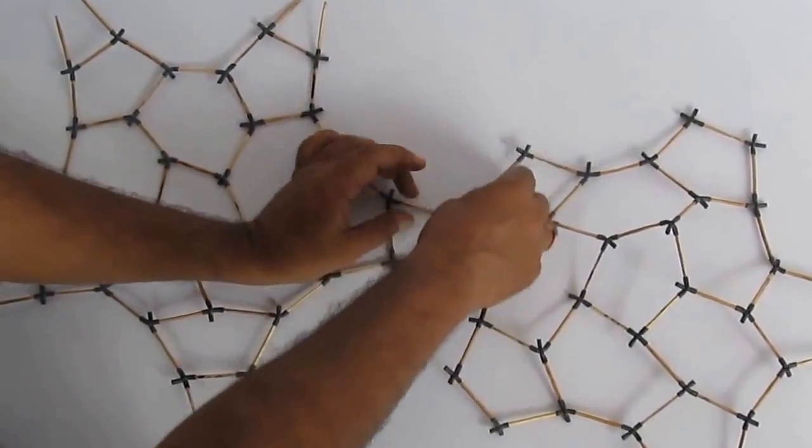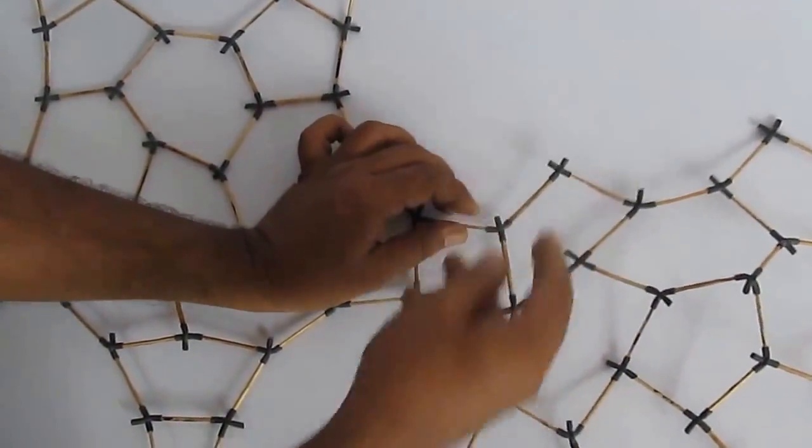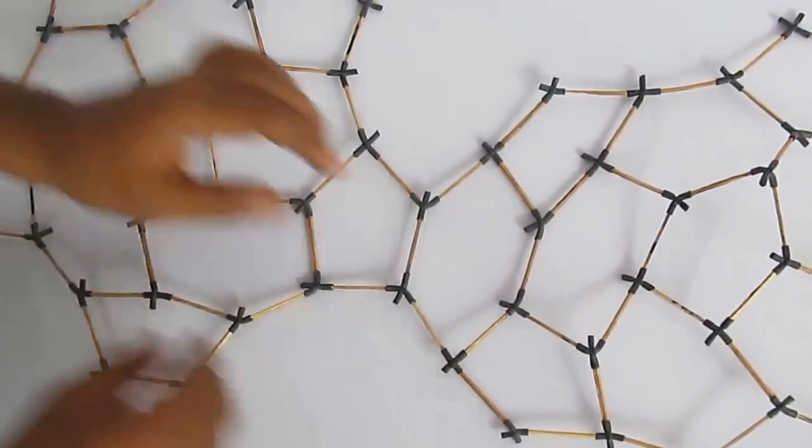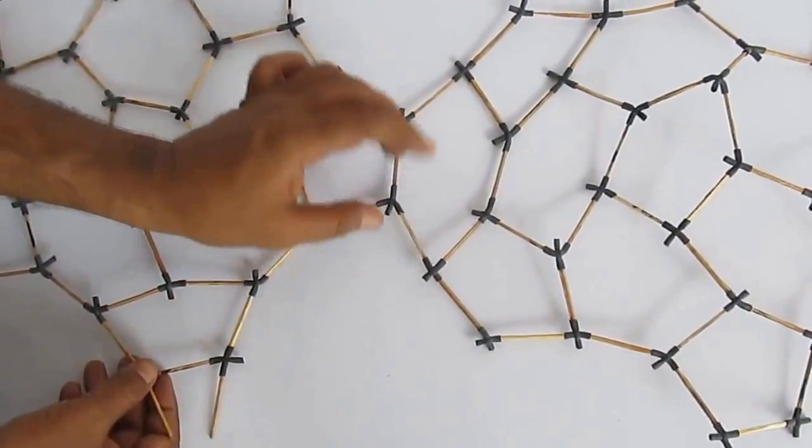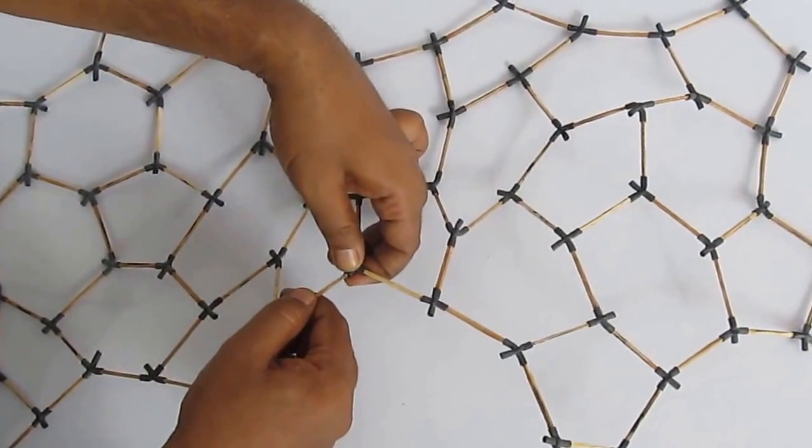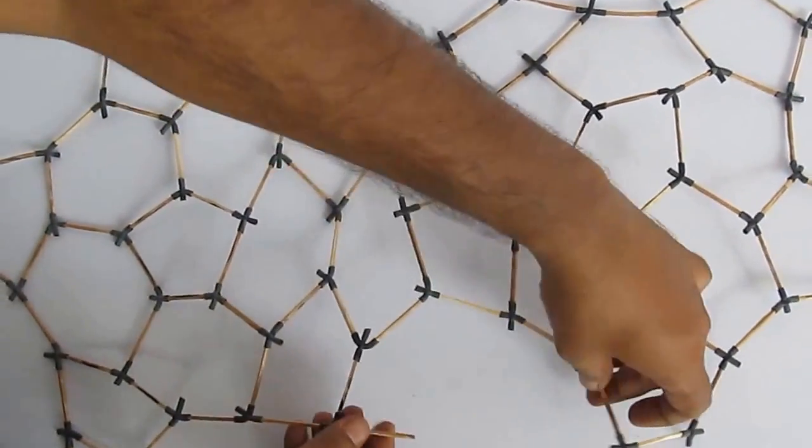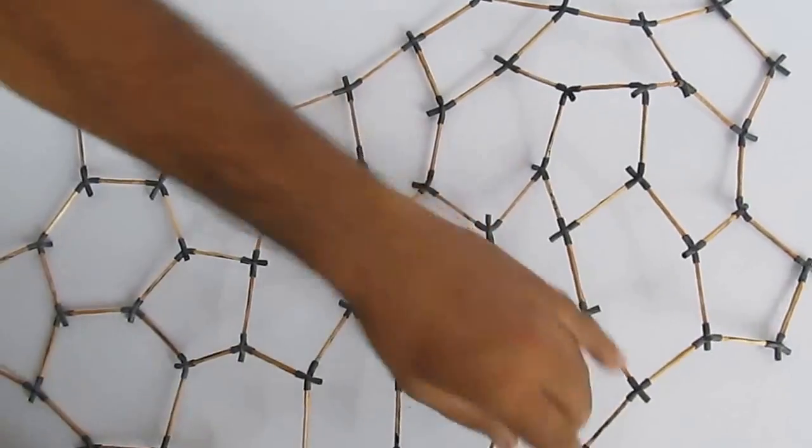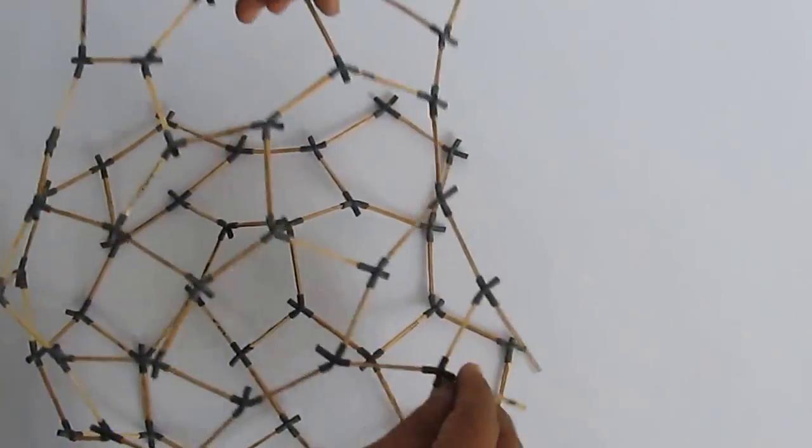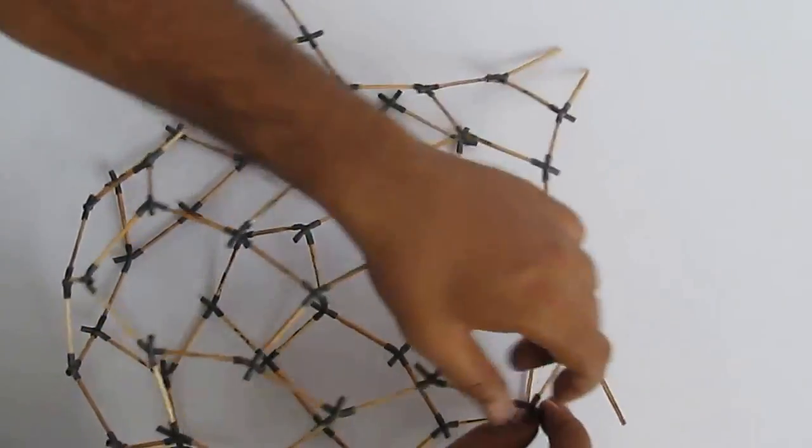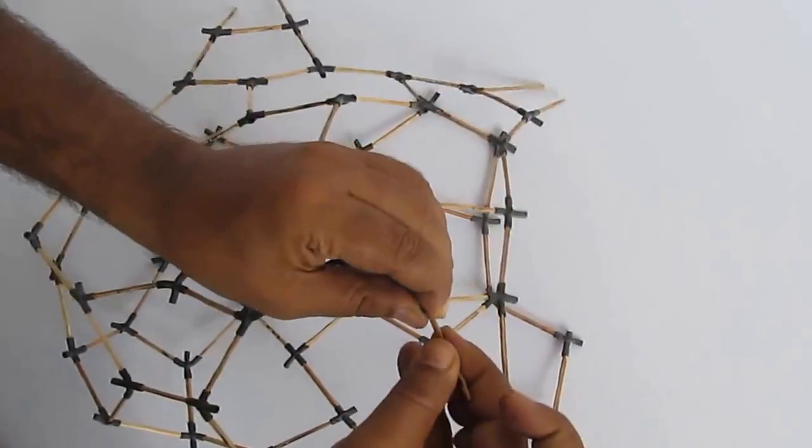The 2 open sticks on one of the structures make half the hexagon. And this needs to be joined with 3 other sticks on the other structure to make a hexagon. So we have to do this for all 5 pairs of open sticks on one structure and join it to 3 other sticks of the other structure to make hexagons.